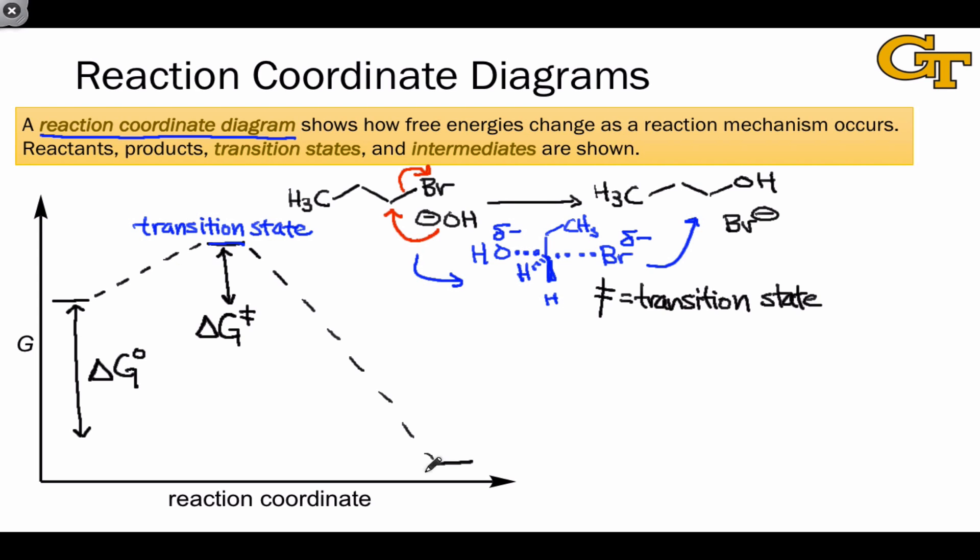Transition states are peaks on the reaction coordinate diagram, but we can also have valleys within a reaction coordinate diagram. Valleys, like the one shown here, correspond to intermediates in the reaction mechanism.